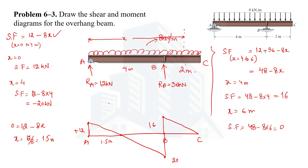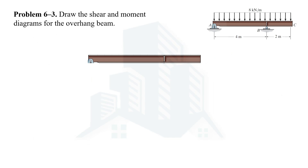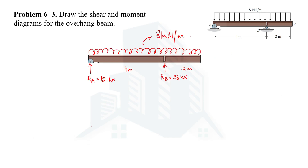So the shear force in the B-to-C portion goes from +16 kN at B up to 0 at C, varying linearly. This completes the shear force diagram. Now let's move on to drawing the bending moment diagram, again marking the key points A, B, and C on a baseline.